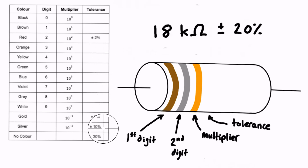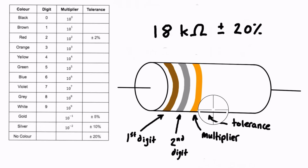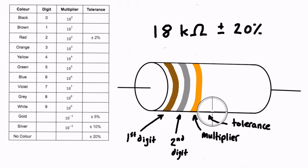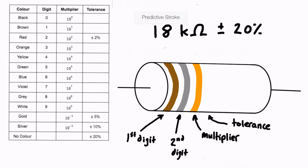For our fourth band, plus or minus 20% — we look in the table and see that 20% has no color assigned. So we don't put any color there, and by leaving it blank, that indicates 20% tolerance. Now you should be able to both read color codes to get resistance and tolerance, or be given the resistance and tolerance and generate what the color code should be.